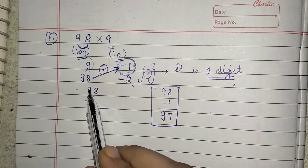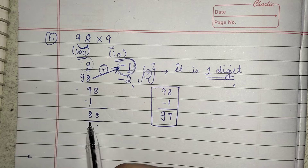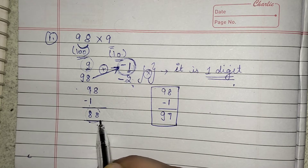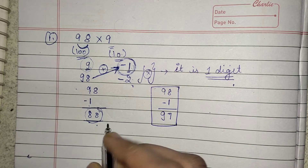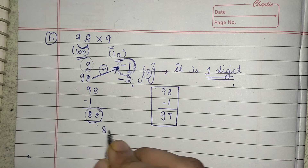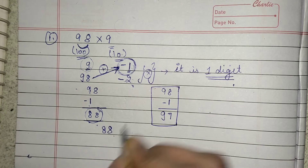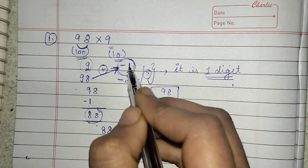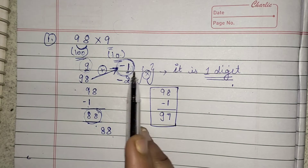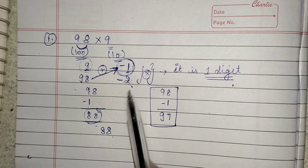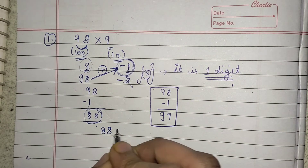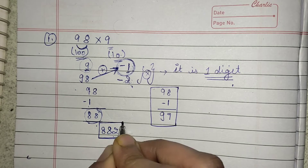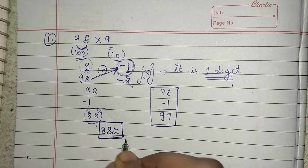What we get: 88 will be my first part of the answer, and the second part remains the same — we do multiplication of the two deviation values, which gives 1 into 2 equals 2. So this will be the answer.